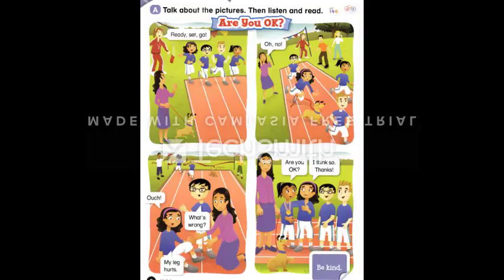Page 8. Lesson 3. Story. A. Talk about the pictures, then listen and read. Are you okay? Ready, set, go! Oh no! Ouch! What's wrong? My leg hurts. Are you okay? I think so. Thanks.